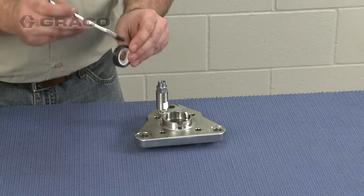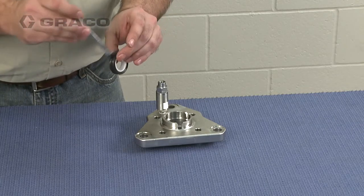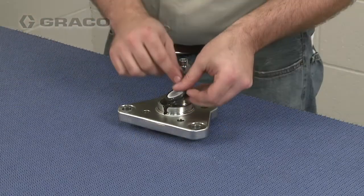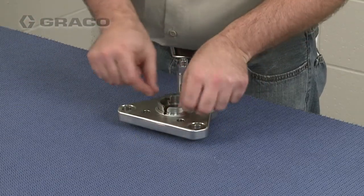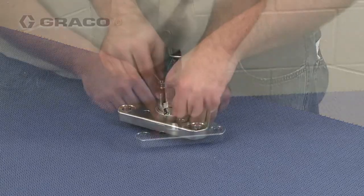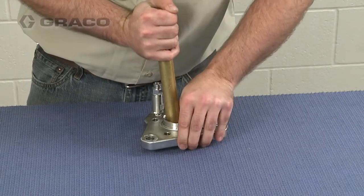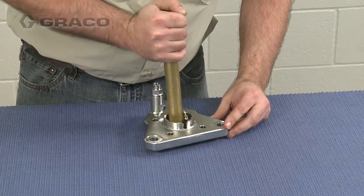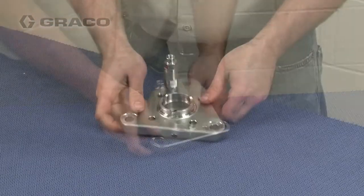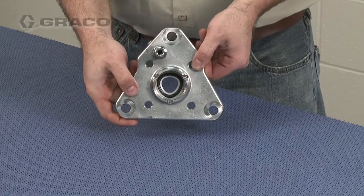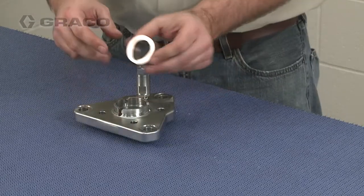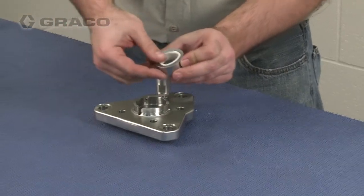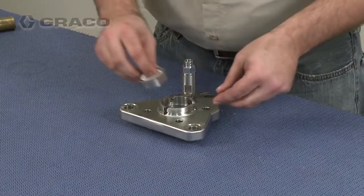Apply lubricant to the backup seal and install the seal into the top plate. Be sure the seal seats fully and use a press if necessary. Then, install the bearing housing and bearing, securing them with the retaining washer and ring.